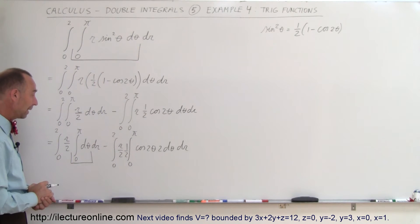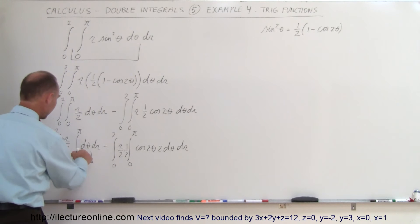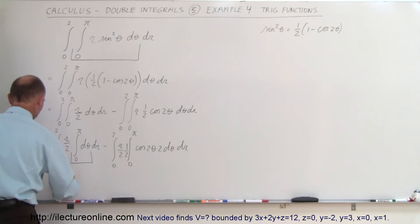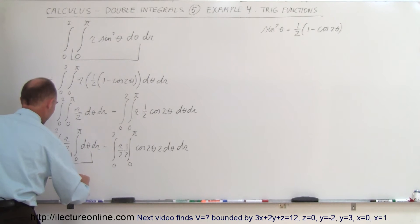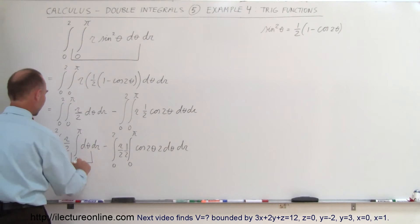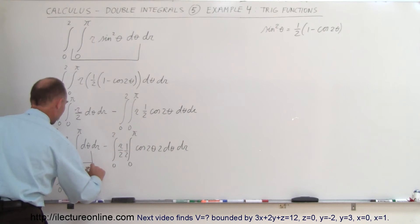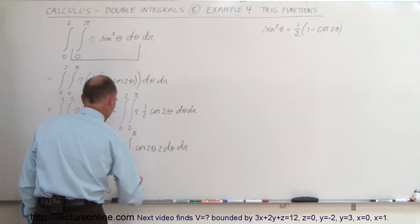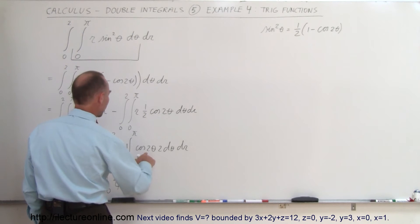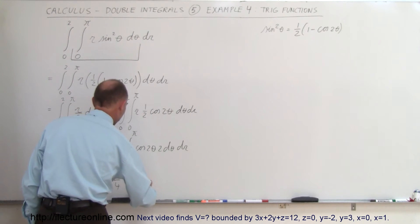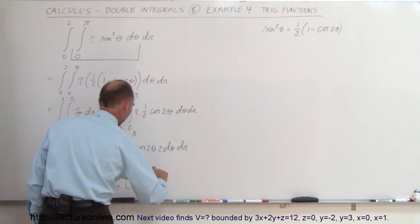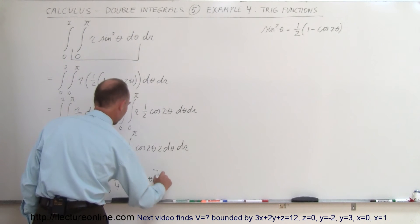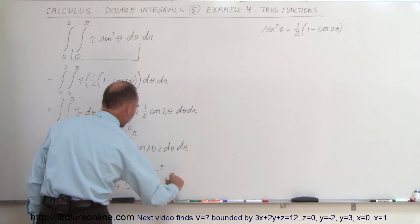Now I'm ready to do the integrals. The first part becomes the integral from 0 to 2 of r over 2 times theta, evaluated from 0 to pi, dr. Minus the integral from 0 to 2 of r divided by 4 times the sine of 2 theta, evaluated from 0 to pi, dr.